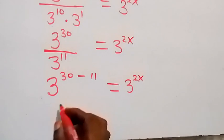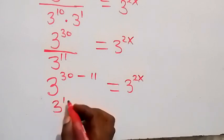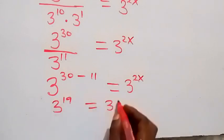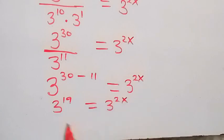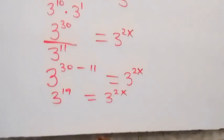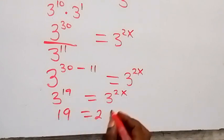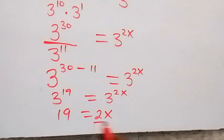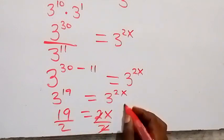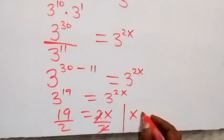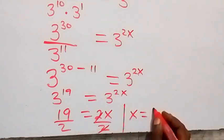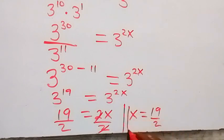30 minus 11 gives us 19, so 3 raised to power 19 equals 3 raised to power 2x. Since the bases are equal, we can equate the powers and we have 19 equals 2x. To get x, divide both sides by 2, and we have x equals 19 over 2. So here we have the value of x in this problem.